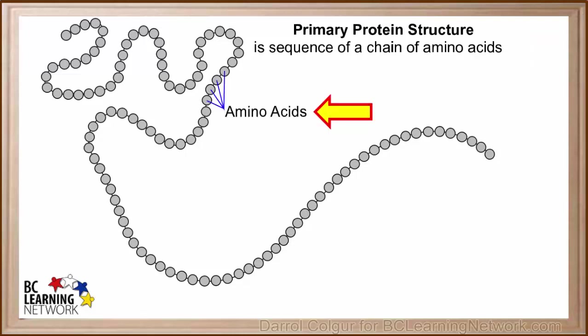The little circles in this diagram represent the building blocks of proteins, or amino acids. There are 20 different types of amino acids which can bind together to form protein chains.